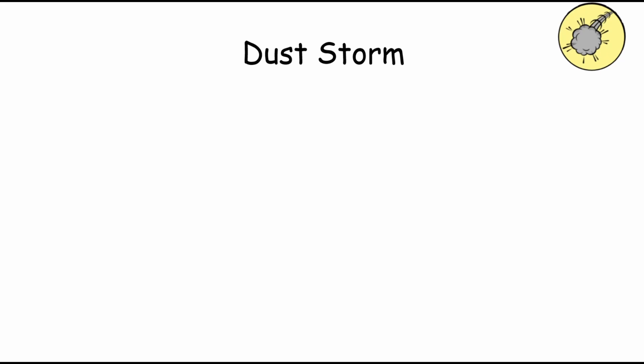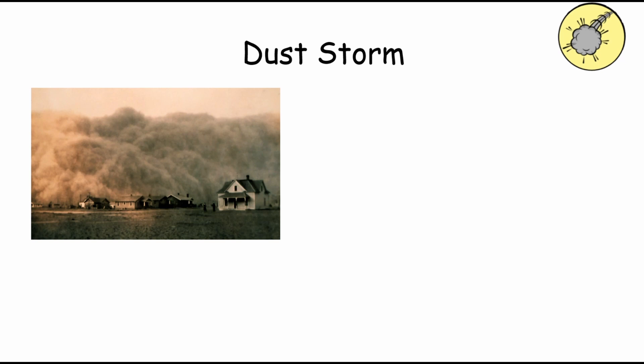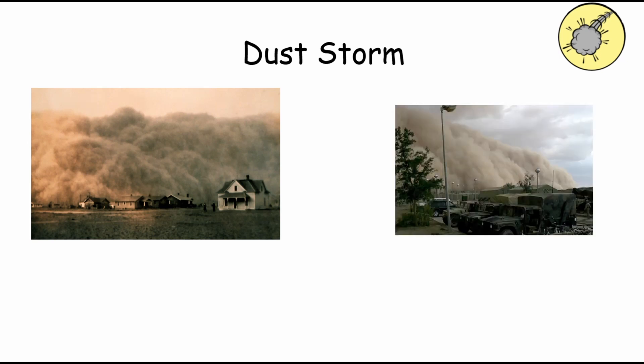A dust storm is a weather phenomenon characterized by strong winds blowing loose dirt and sand, reducing visibility and creating hazardous conditions. These storms typically occur in arid and semi-arid regions, where dry soil and lack of vegetation makes it easier for wind to pick up dust particles. Dust storms can be triggered by several factors, including thunderstorms, strong pressure gradients, or human activity such as farming or construction. Dust storms pose risks to transportation, agriculture, and public health, such as by inhalation of dust particles that can cause respiratory problems. Additionally, they lead to soil erosion and damage infrastructure.